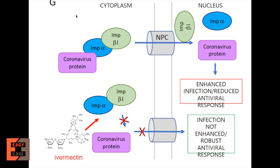This is figure G from the study, which explains the mechanism of action of ivermectin. This entire picture depicts a cell — on the left-hand side we have the cytoplasm and on the right-hand side we have the nucleus. These two lines represent the membrane of the nucleus. The coronavirus wants to get inside the nucleus to create copies of itself, and it does so by binding to IMP-alpha and IMP-beta-1, going through a transporter to get inside the nucleus, which causes enhanced infection such as reduced antiviral response.